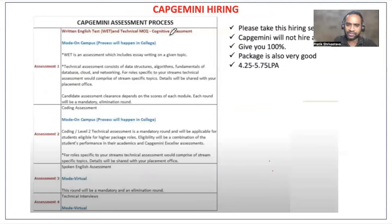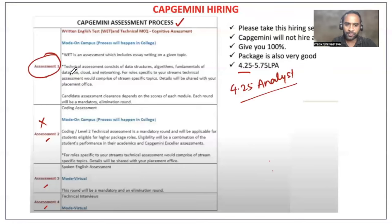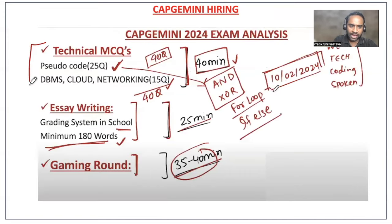This is the exact Capgemini assessment process: assessment one, assessment two, assessment three, assessment four. If you clear assessment one but do not clear assessment two, you will be hired for the Capgemini analyst role. Assessment one will have essay writing and a technical assessment. Assessment two will have coding, and based on that you will get different packages — 5.75 or 7.25. Assessment three is a spoken English assessment, and assessment four is a technical interview.